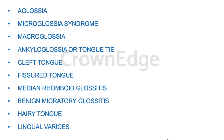The developmental anomalies affecting the tongue include: aglossia, microglossia, macroglossia, ankyloglossia (also called tongue tie), cleft tongue, fissured tongue, median rhomboid glossitis, benign migratory glossitis, hairy tongue, and lingual varices.